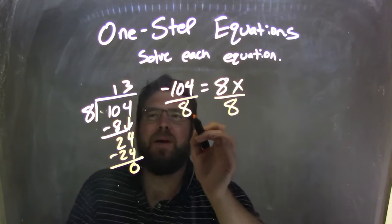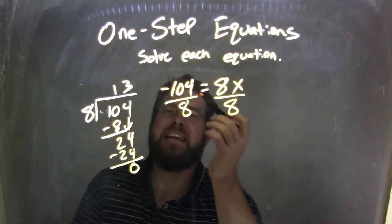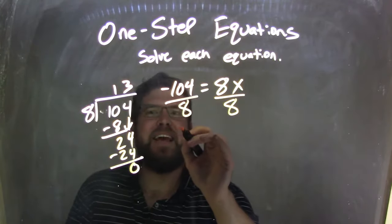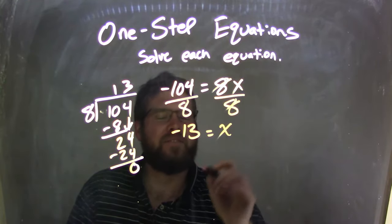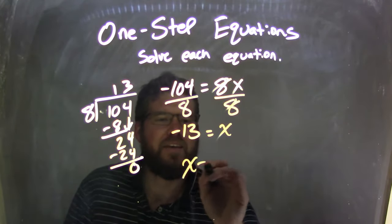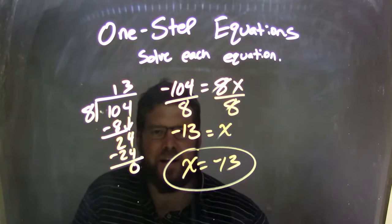And so, 104 divided by 8 is 13. But negative 104 divided by 8 is negative 13 equals, well, 8 and 8 cancel. That's x. So I can rewrite this nicely. x equals negative 13 as my final answer.